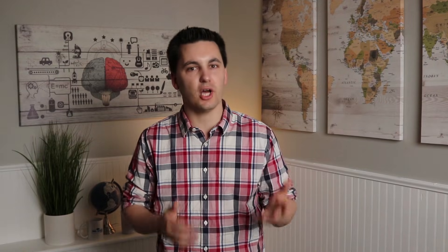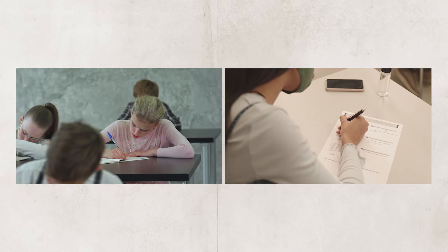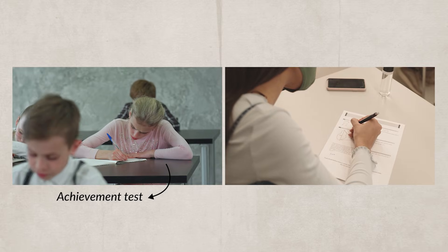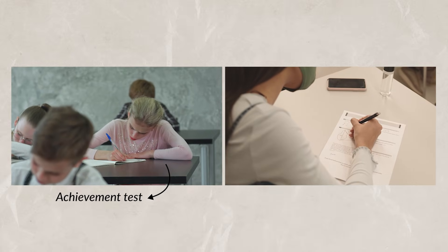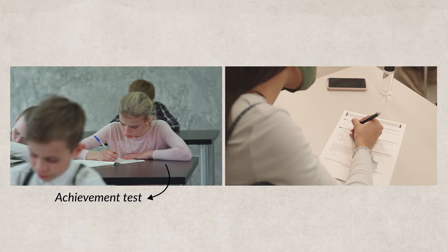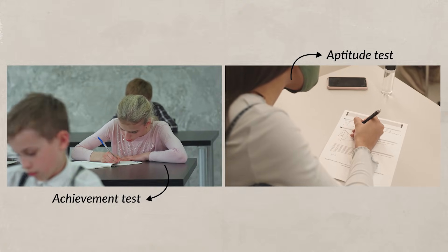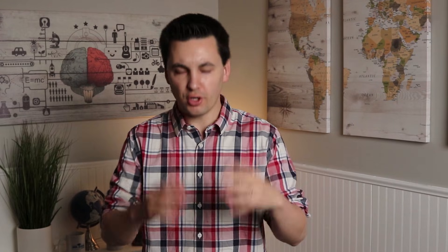Traditionally, when trying to assess a person's intelligence, people would take an intelligence test, which gives an individual a score comparing them to others. We can break these tests into two groups: achievement tests, which attempt to show what an individual has learned, and aptitude tests, which show what an individual can learn.